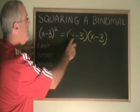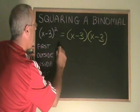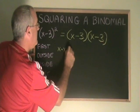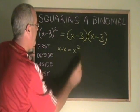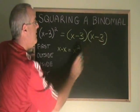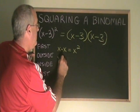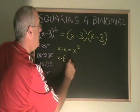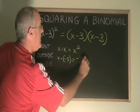The first terms are the x and the x. x times x is x squared. The outside terms are the x and the negative 3. x times negative 3 is negative 3x.